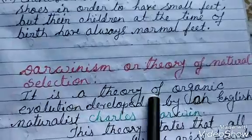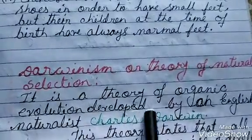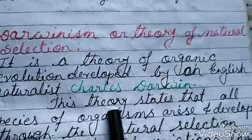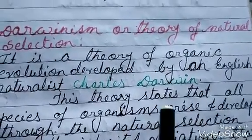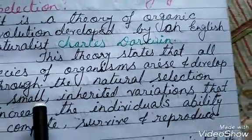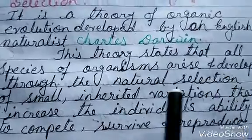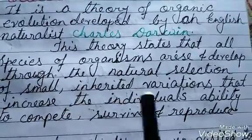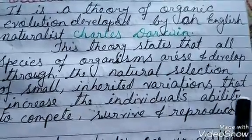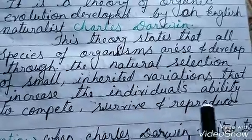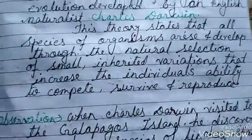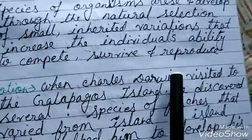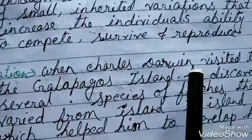It is a theory of organic evolution developed by an English naturalist Charles Darwin. This theory states that all species of organism arise and develop through the natural selection of small inherited variations that increase the individual's ability to compete, survive and reproduce.